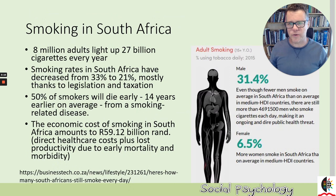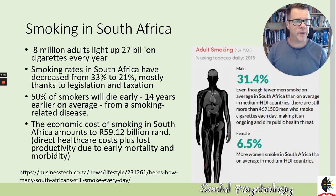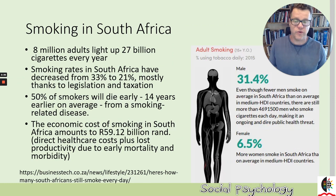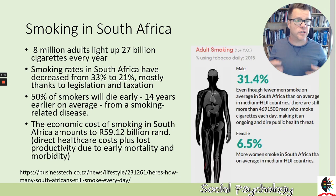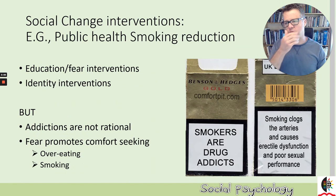I'm going to use the example of smoking in this lecture. It's a widespread behavior that everyone agrees is extremely unhealthy. Smokers die on average 14 years earlier — that's a big cost for the individual. And of course you've got tobacco companies enriching themselves, so individuals are paying the cost for other people to become wealthy. It costs the country as well — imagine the hospitalization and medical care for all those ill from smoking-related disease.